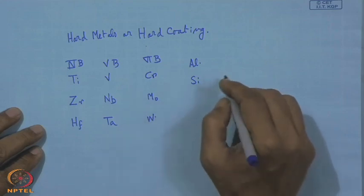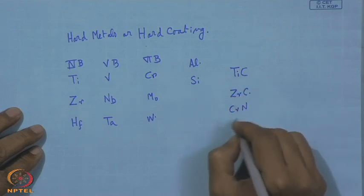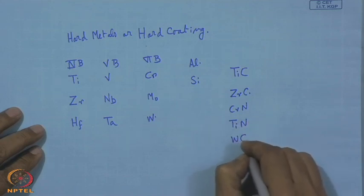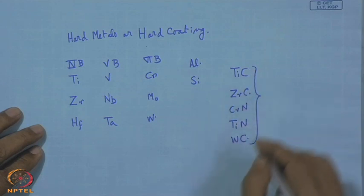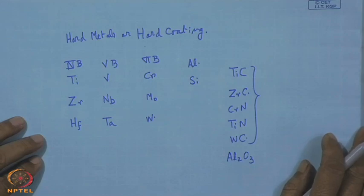If we are interested in titanium carbide, zirconium carbide, chromium nitride, titanium nitride, tungsten carbide, or aluminum oxide, how can we deposit these? These materials are of immediate interest because they have required properties: hardness, high-temperature hardness, wear resistance, low friction, high wear resistance, chemical stability, oxidation resistance - many properties which are definitely attractive from the standpoint of mechanical function.